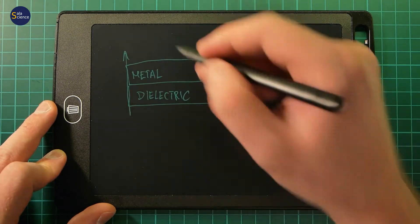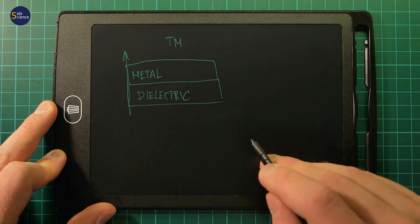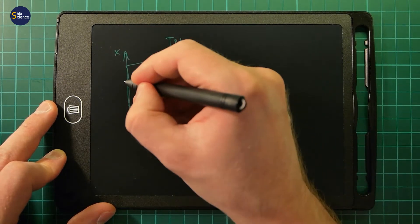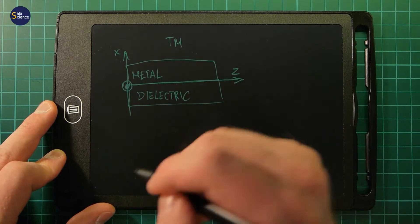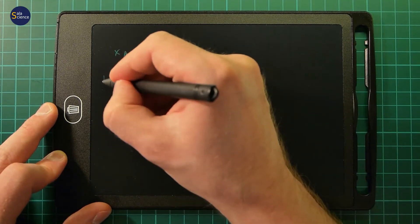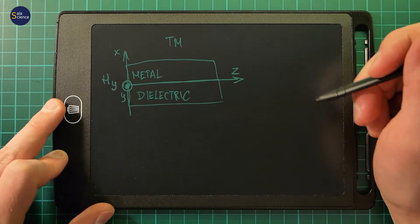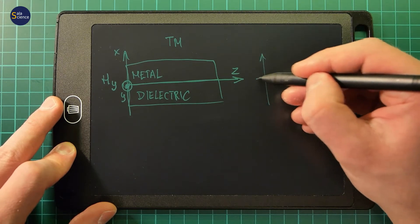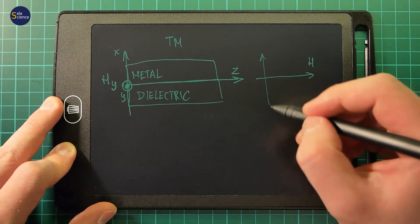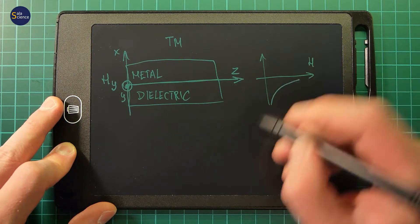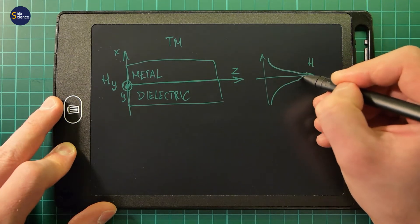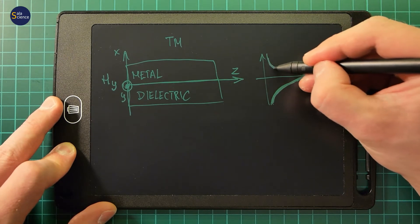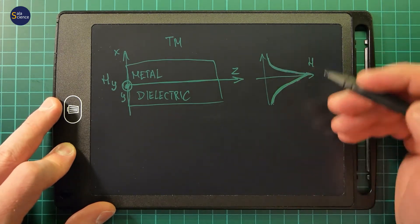But there is only a solution for TM modes — transverse magnetic modes. So let's assume we have here some z, here is x, and here is the y-component. So we have a y-component of the magnetic field. We assume that this y-component of the magnetic field decreases exponentially, so it will look like this — exponential decay in both the dielectric and in the metal.